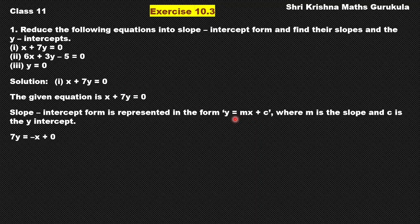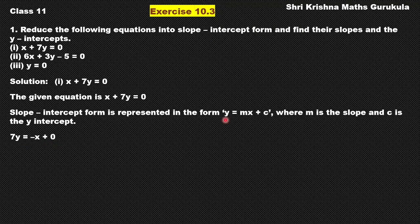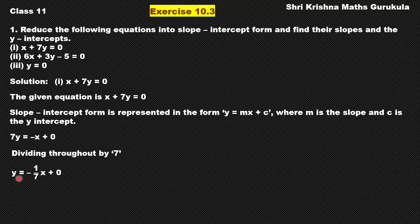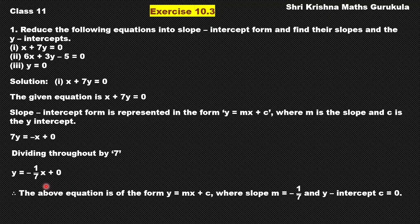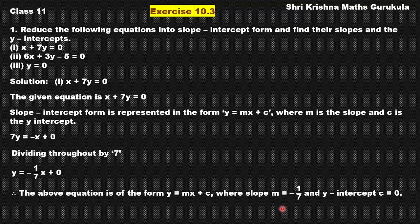To bring it to slope-intercept form, we keep 7y in the LHS and move the x term to the RHS: 7y equals minus x plus 0. Now the term must be only y, not 7y. So we divide throughout by 7, giving y equals minus 1 by 7 times x plus 0. We have reduced the given equation to slope-intercept form. On comparing with the standard form, slope is minus 1 by 7 and y-intercept is 0. So this is a line passing through the origin.